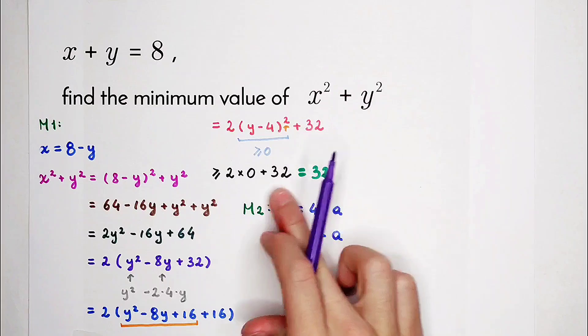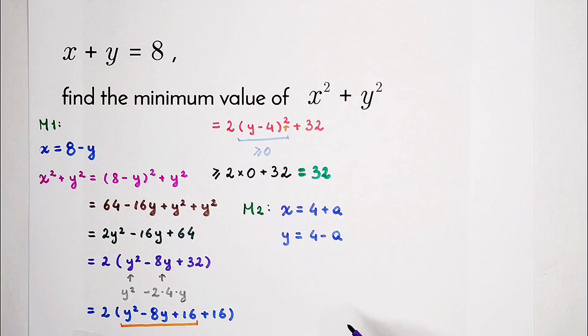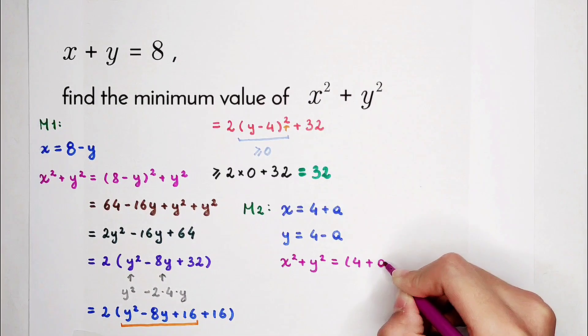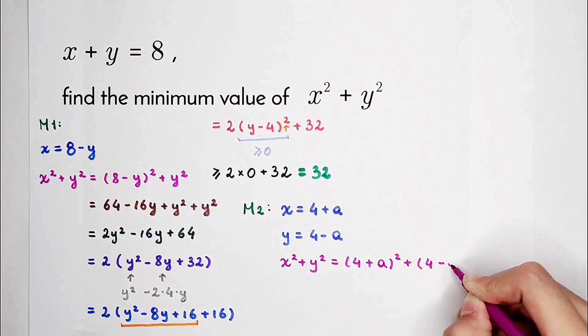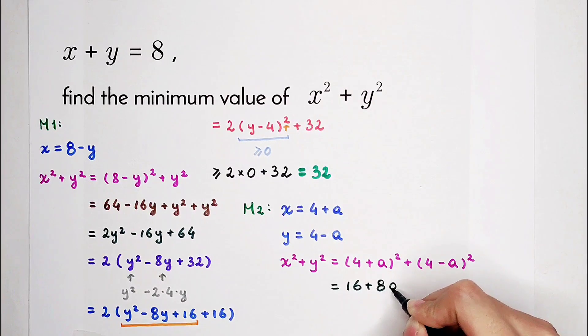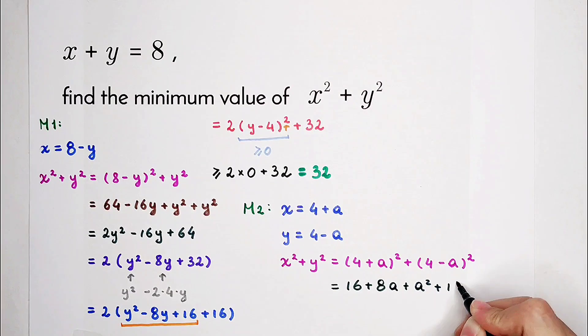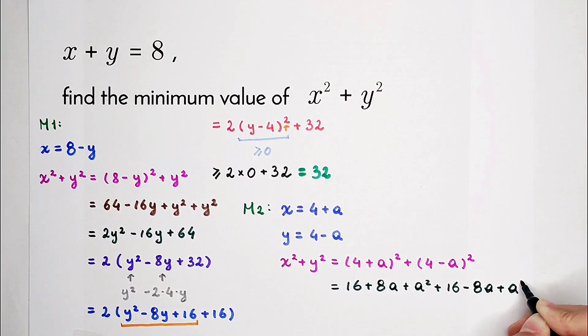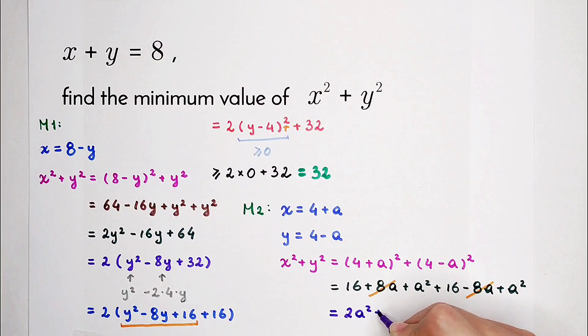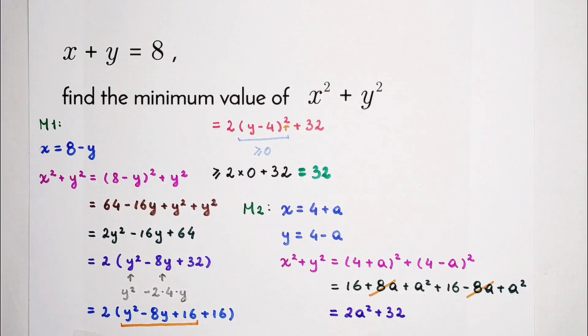So now we can substitute the new terms into our term, x squared plus y squared. That is 4 plus a all squared, and then plus 4 minus a all squared. 16 plus 8a plus a squared, and then plus 16 minus 8a plus a squared. Two terms can cancel out each other: plus 8a minus 8a. So what's left? a squared plus a squared plus 16 plus 16. The final term is 2 times a squared plus 32.